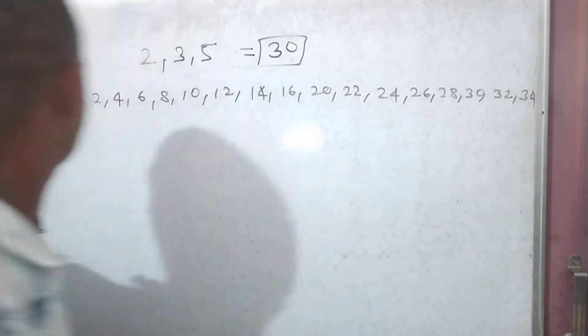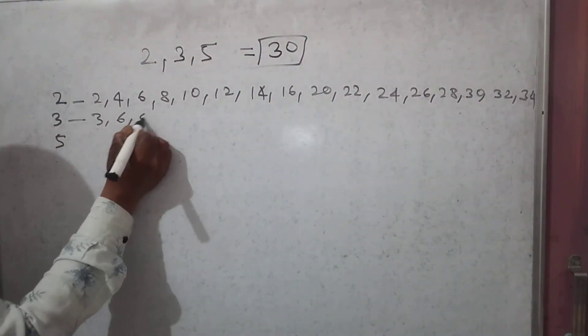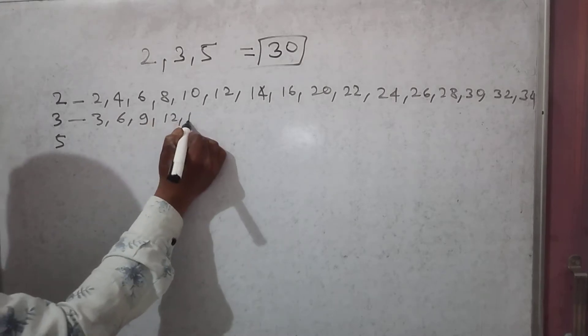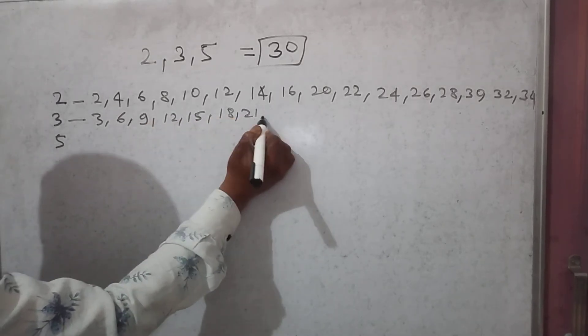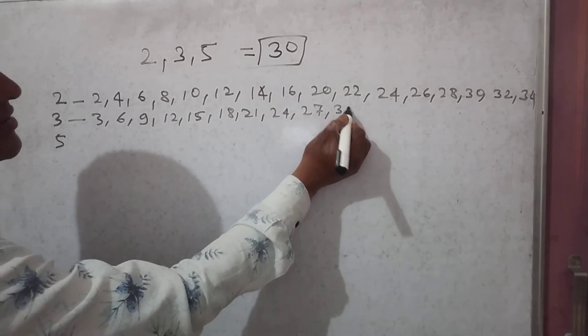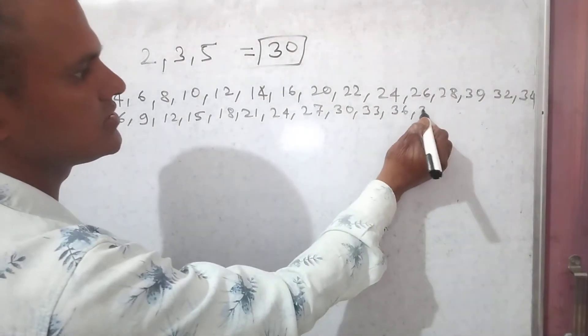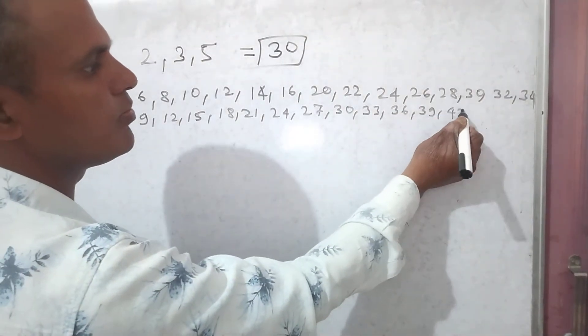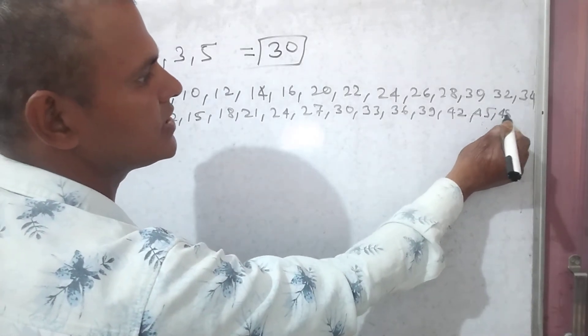Multiples of 3 are: 3, 6, 9, 12, 15, 18, 21, 24, 27, 30, 33, 36, 39, 42, 45, 48, and so on.